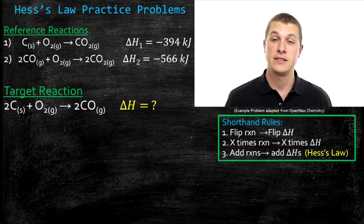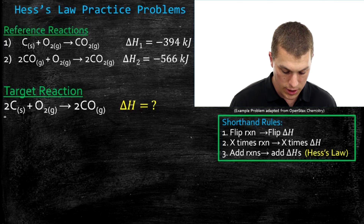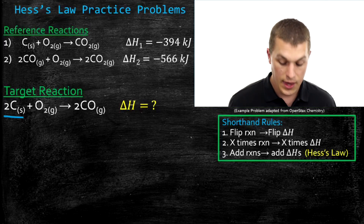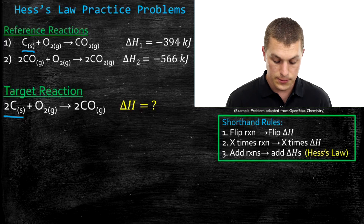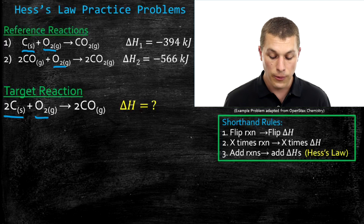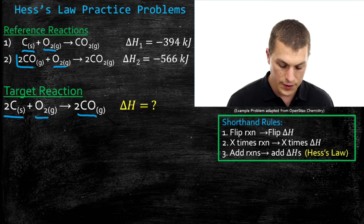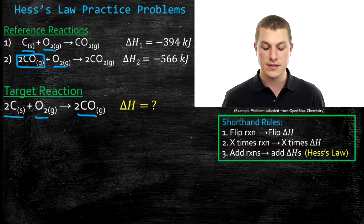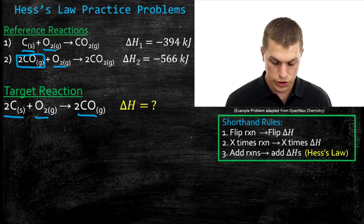Once again, we're going to start by seeing if our reactants and products are on the correct side. Our first reactant in the target reaction is carbon, and in reaction one, carbon is on the left side — it's a reactant also, so that's good. Similarly, oxygen is on the correct side in both reference reactions as a reactant. Now we want to get out carbon monoxide, and the only place we see it is on the reactant side of reference reaction two — that's the wrong side, so we're going to have to flip reaction two.